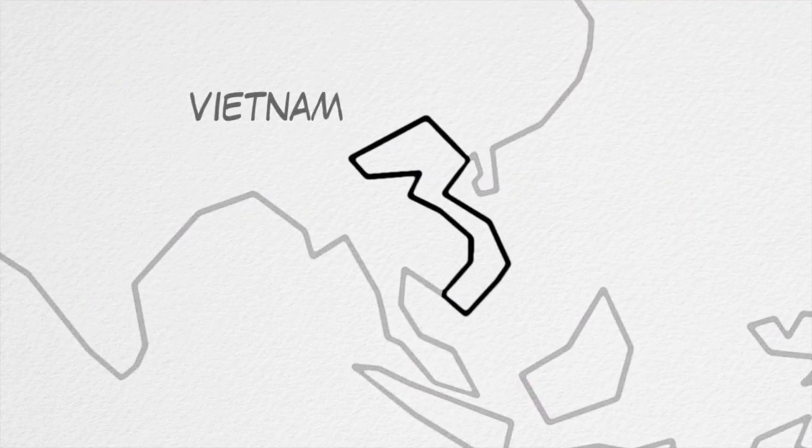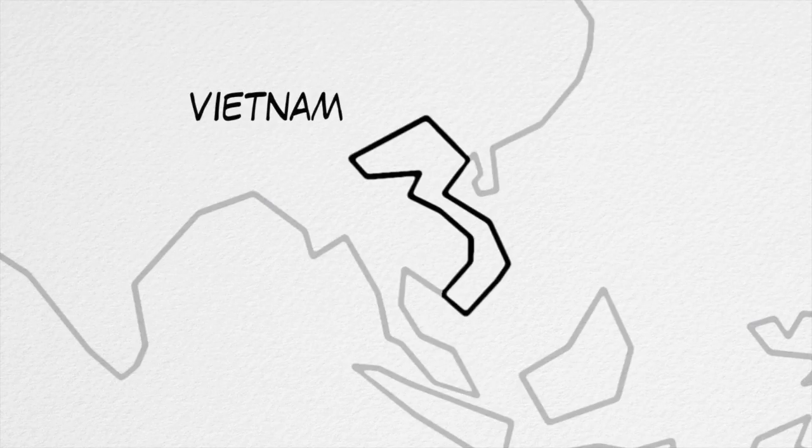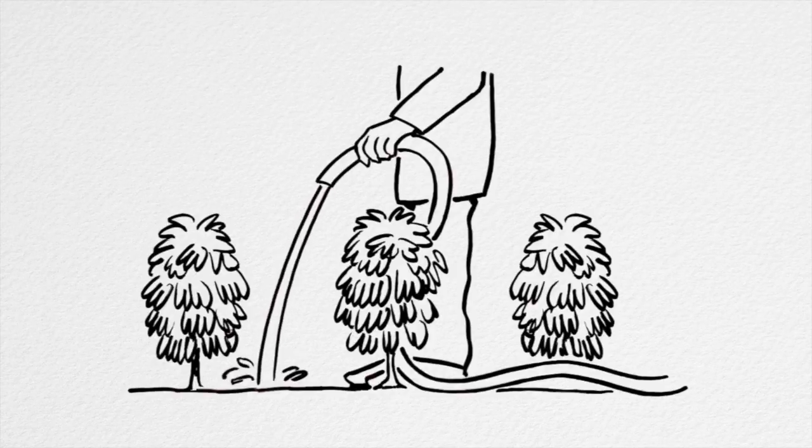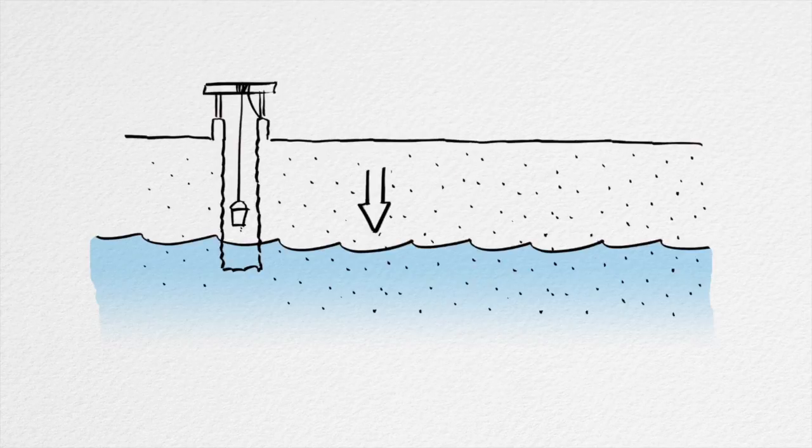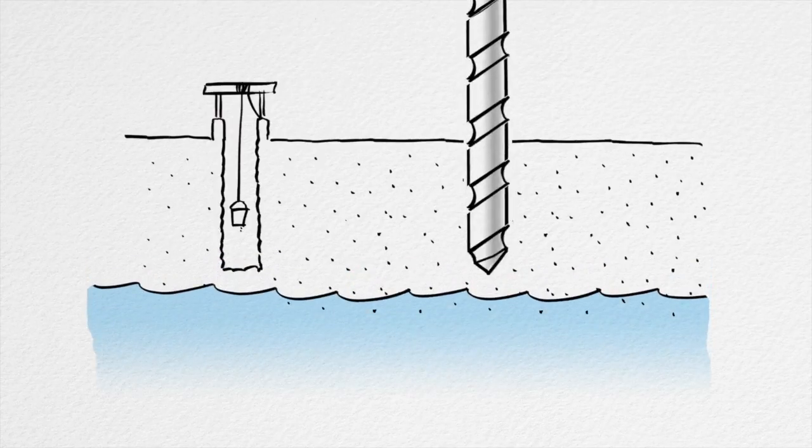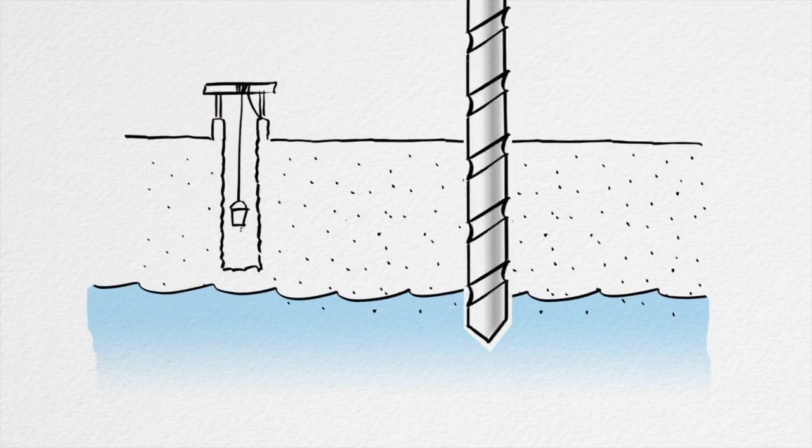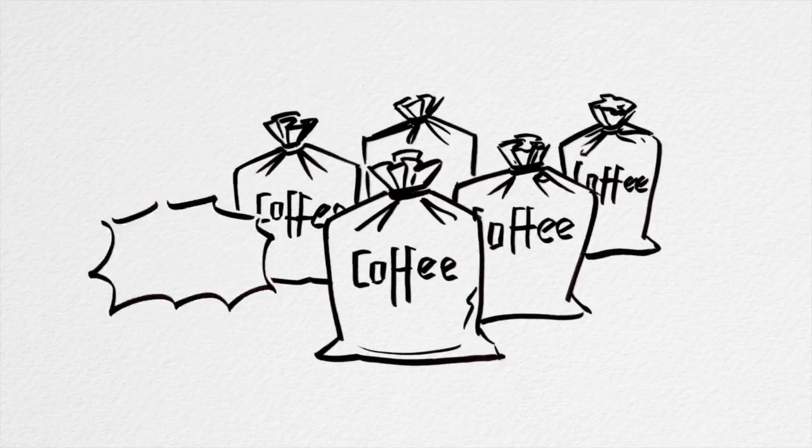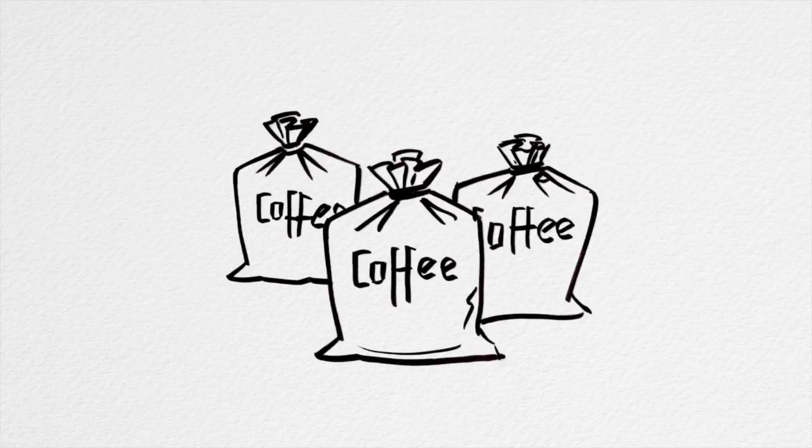In Vietnam, irrigation water is crucial for coffee production. But as dry seasons are getting longer and more intense, water is becoming scarce. As the water table decreases, farmers have to spend more time and money on irrigation. Otherwise, they'd suffer drastic reductions in harvest and quality.